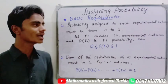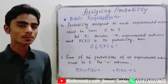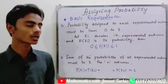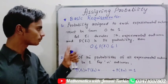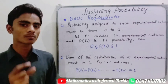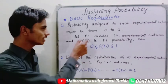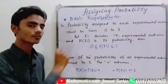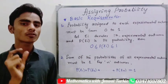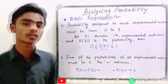Here, e-i denotes the i-th experimental outcome. So e-i is used to show the i-th experimental outcome, and p of e-i is its probability. For example, if we take any experimental outcome e-i, whatever probability value is assigned to it as p of e-i, it will be between zero and one.